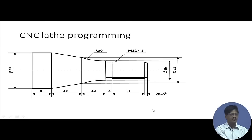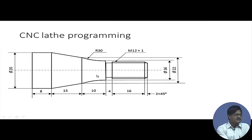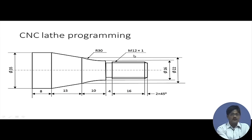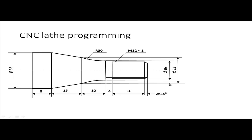Now let us take a lathe programming exercise. In this turning exercise we have: a straight turned portion, a taper turned portion, a circular interpolation portion, a groove, threading, chamfering, and facing. We start with the assumption that facing has already been done. The part has a metric thread of 1 millimeter pitch and 12 millimeter diameter, a 30 millimeter diameter circular interpolation section, and other diameters shown in the figure.